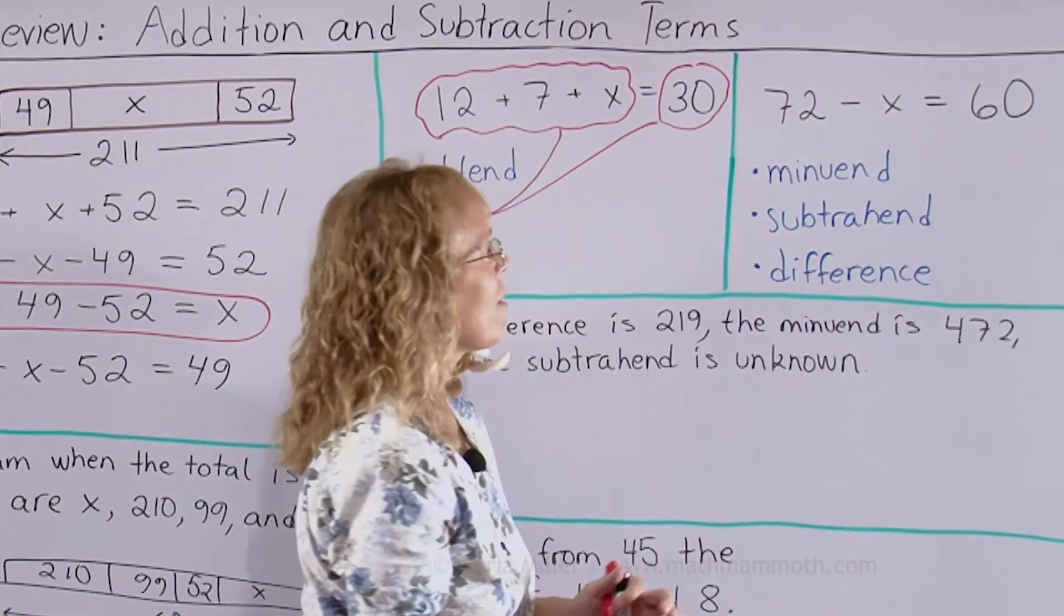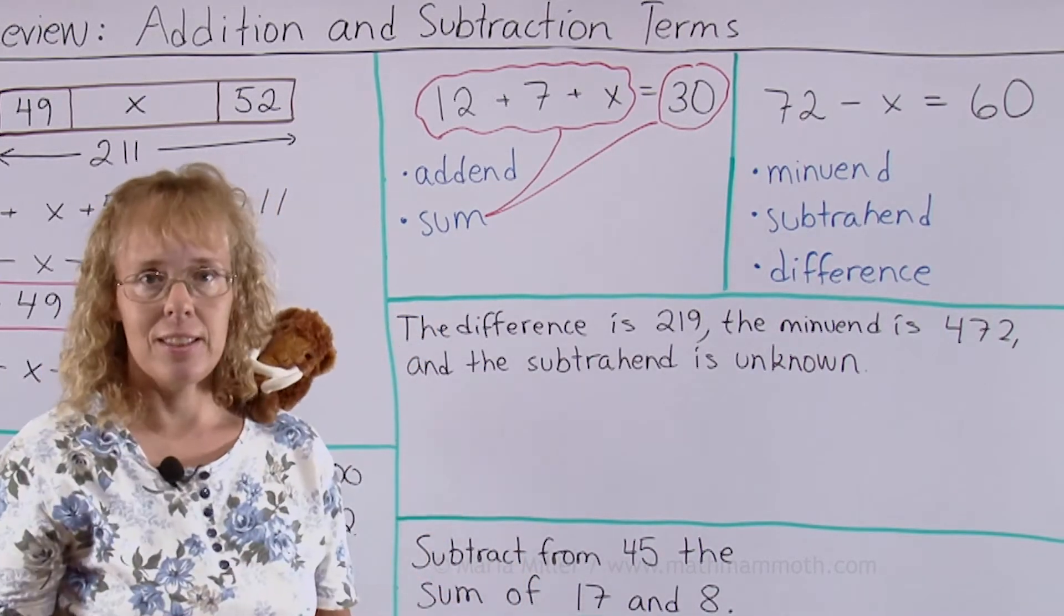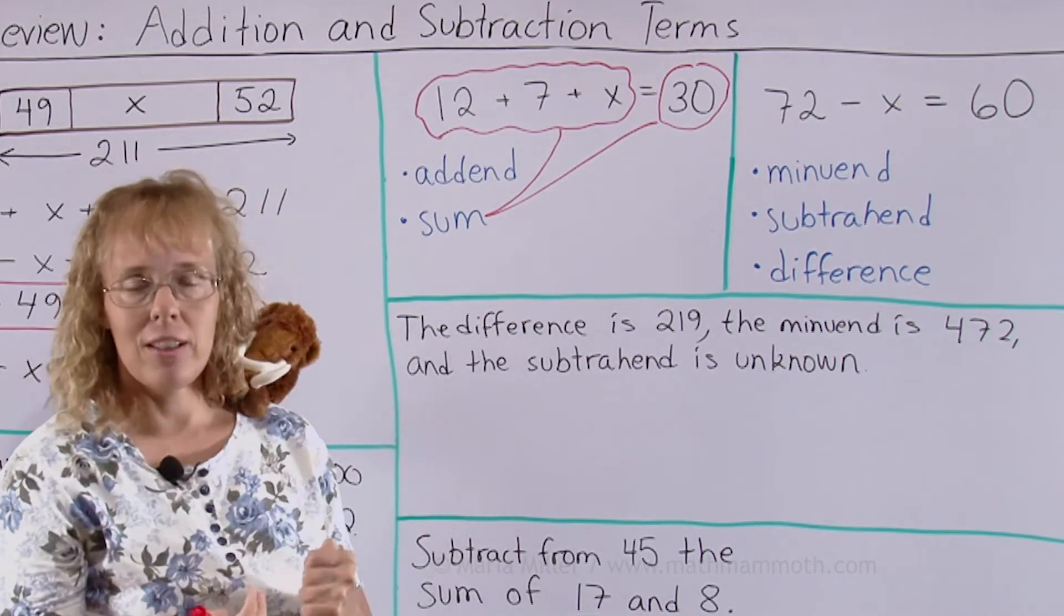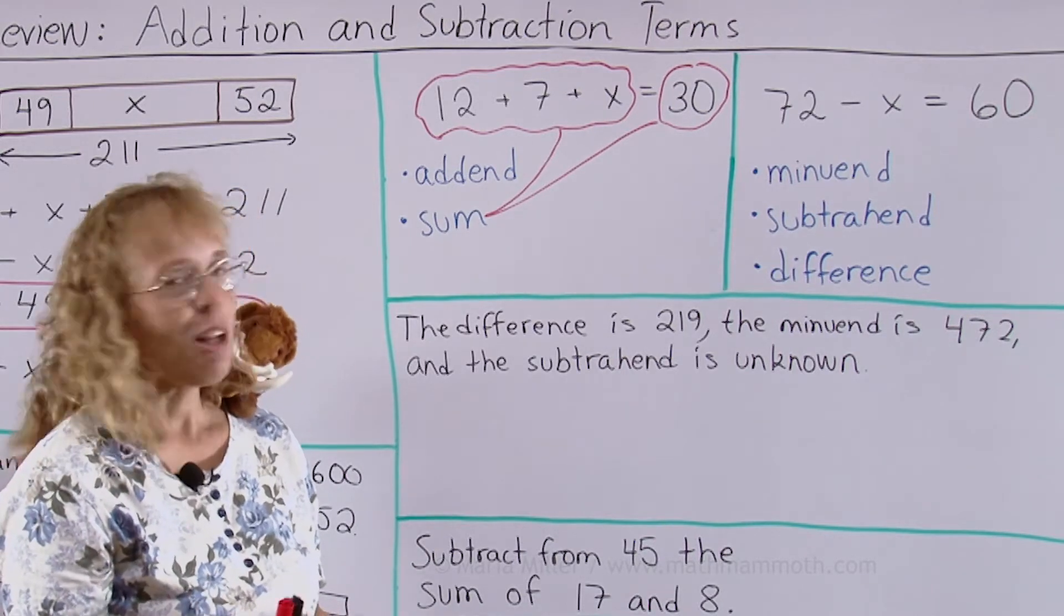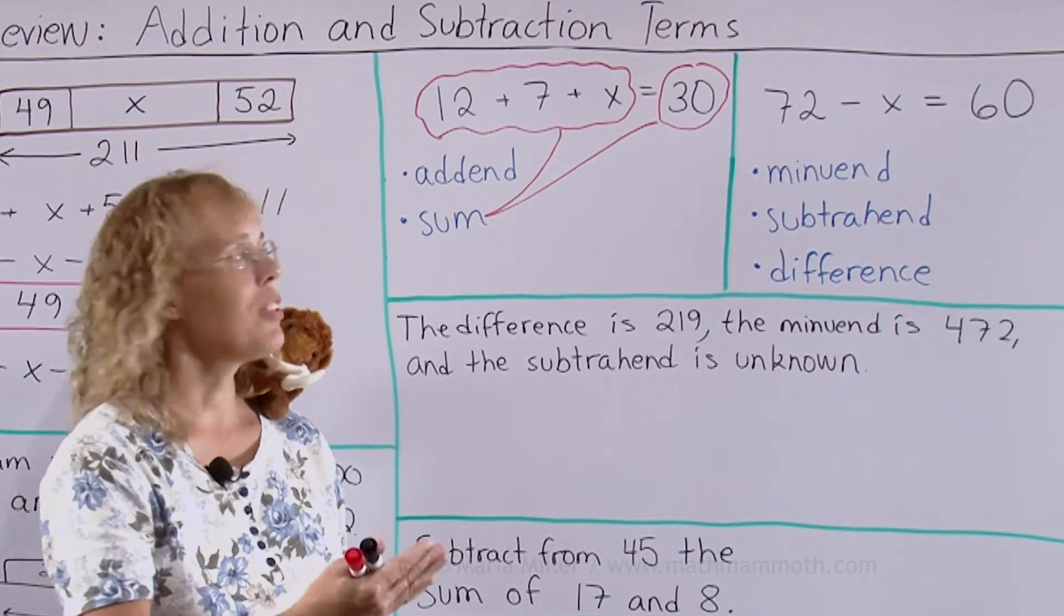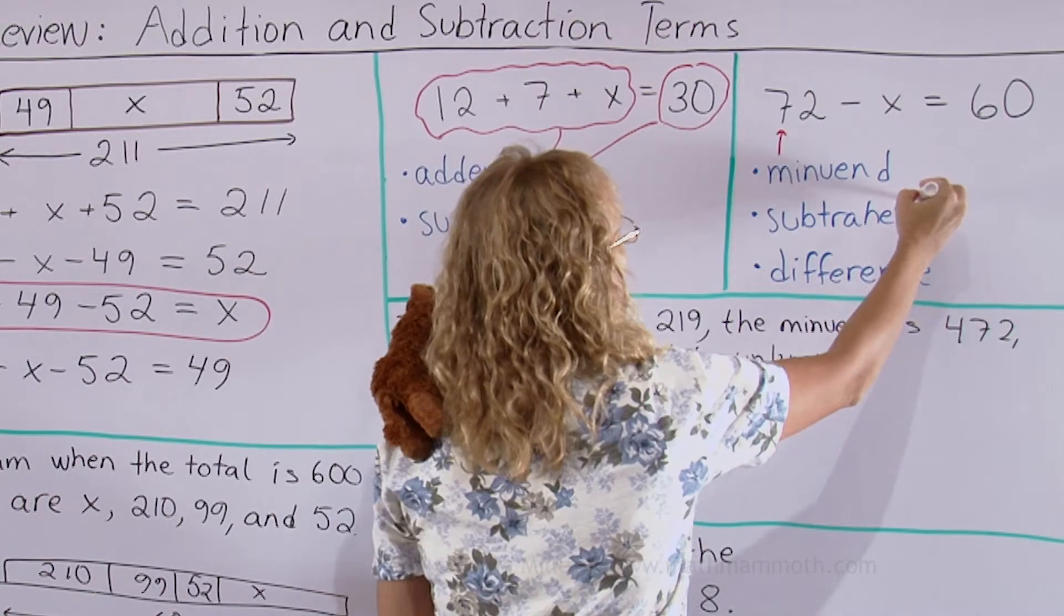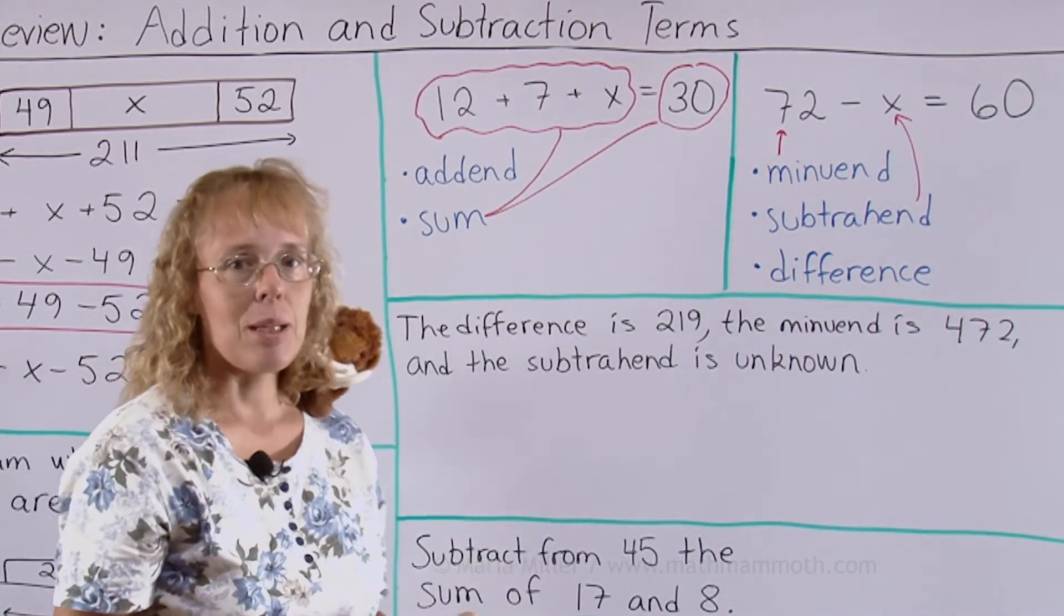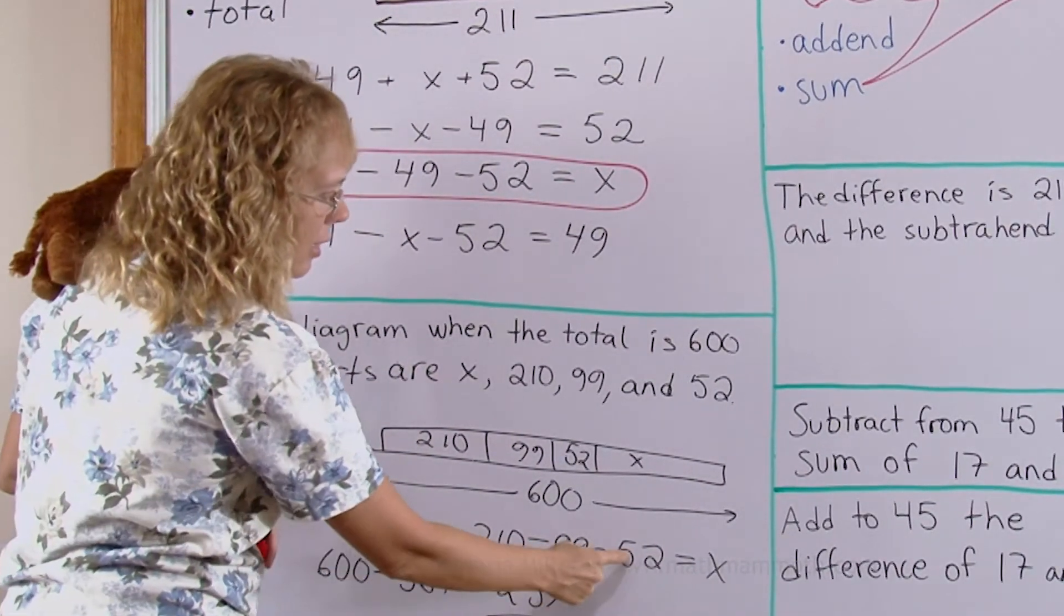Over here in subtraction we have three terms to remember: minuend, subtrahend and the difference. Now difference is the answer. The minuend and subtrahend are the two other numbers in it and minuend comes first. I always remember it because in alphabet minuend comes before subtrahend. M comes before S so minuend comes first. This is the minuend. Subtrahend is this one and if you had more numbers you're subtracting then all of them would be subtrahends. Like here this is minuend and all these are subtrahends.